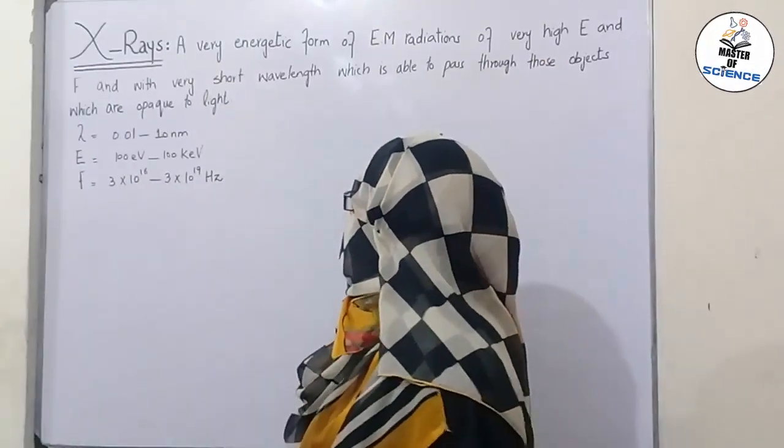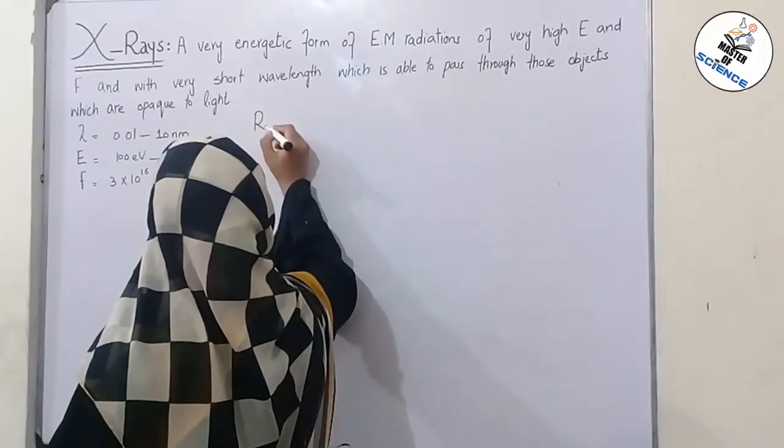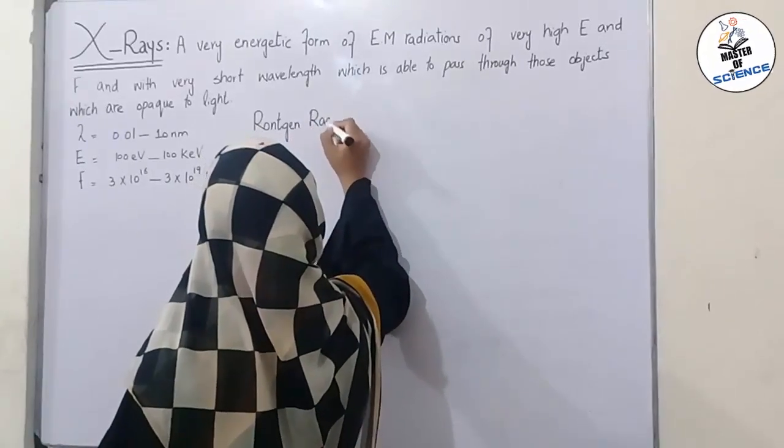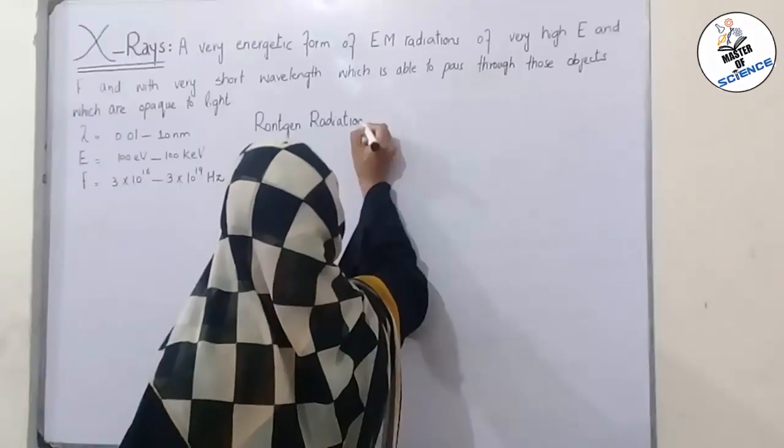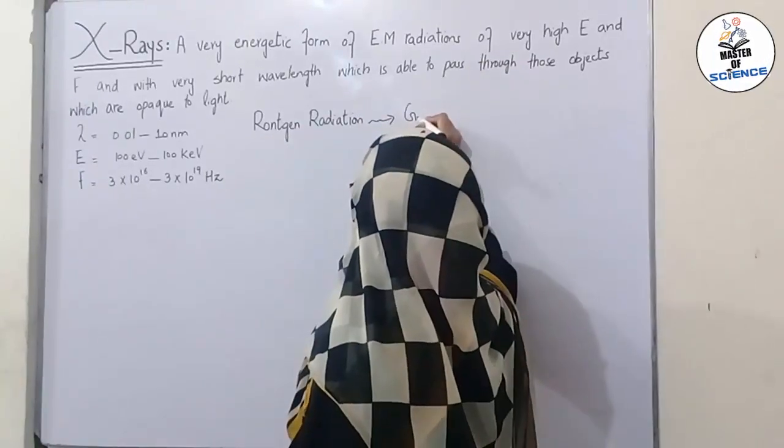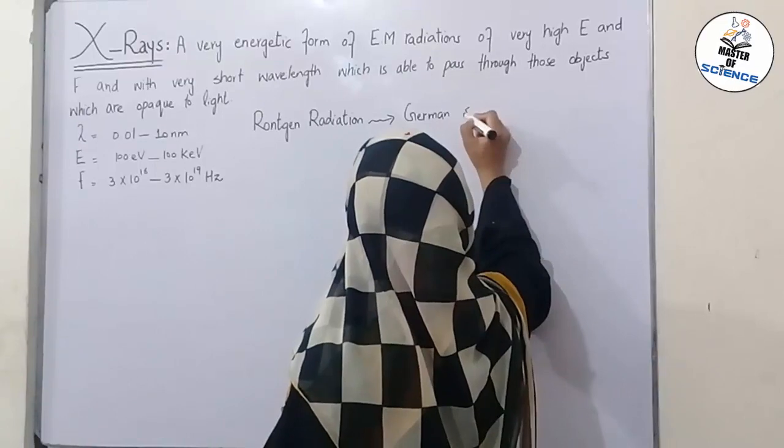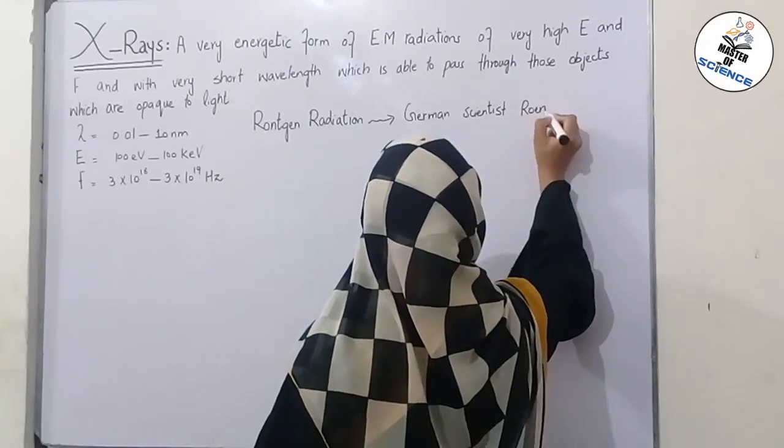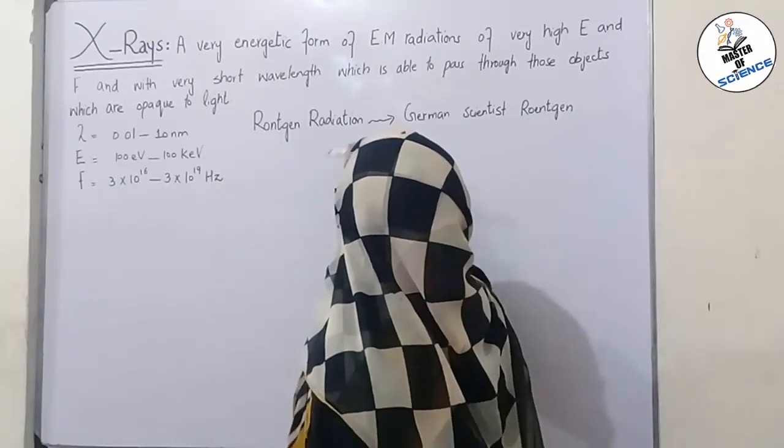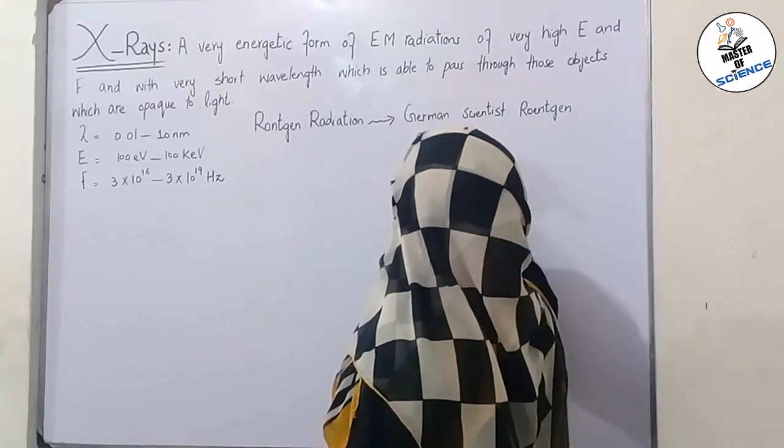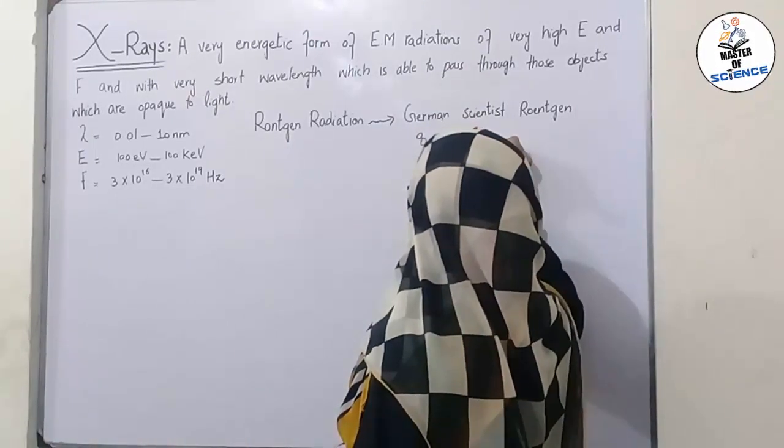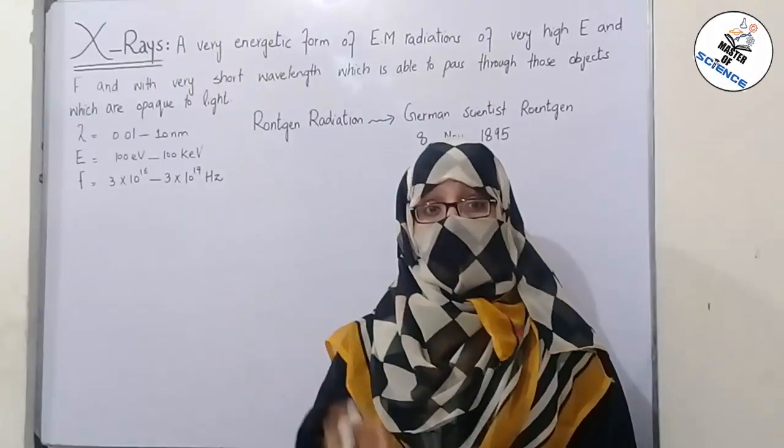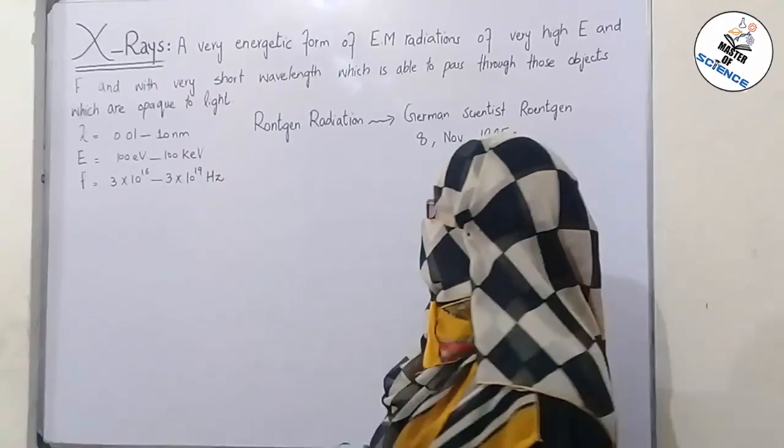These X-rays are also called as Röntgen rays or Röntgen radiations, after a German scientist which is named Röntgen. He discovered these X-rays on 8 November 1895. He named it X-radiations to signify an unknown type of radiations.